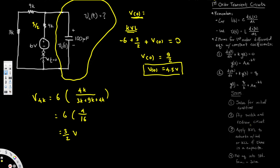Next we flip the switch and redraw the circuit. When the switch is open there is no current in the middle branch, so we can neglect it. We only keep the side parts: the 3k resistor, the 9k resistor, the 100-microfarad capacitor with voltage v_c, and the remaining connections.